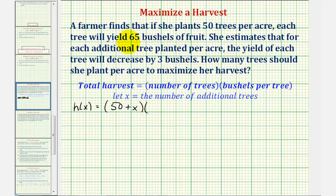Well the bushels per tree start at 65, but it decreases by three bushels for every extra tree. So the total number of bushels per tree would be 65 minus 3x. So 50 plus x is the total number of trees, and 65 minus 3x is the total number of bushels per tree.